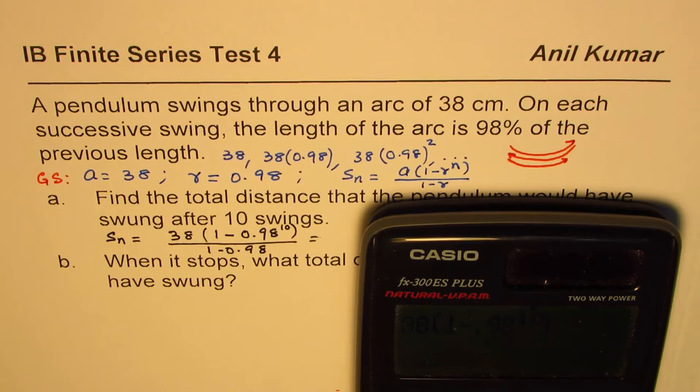It is 38 within brackets (1 minus 0.98 to the power of 10) bracket close, divided by within brackets (1 minus 0.98), and that is equals to 347.56.